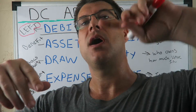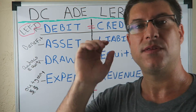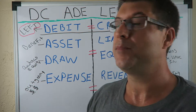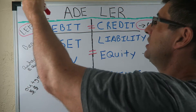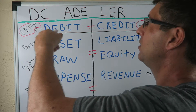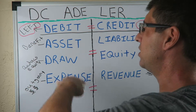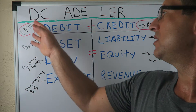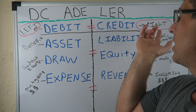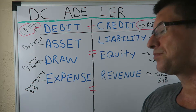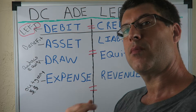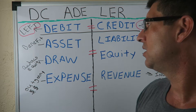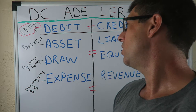So we've gone over the first four. We went over DC Adler, then we went over what they all stand for, then we went over debit is left, credit is right, and then we went over debits always equal credits.